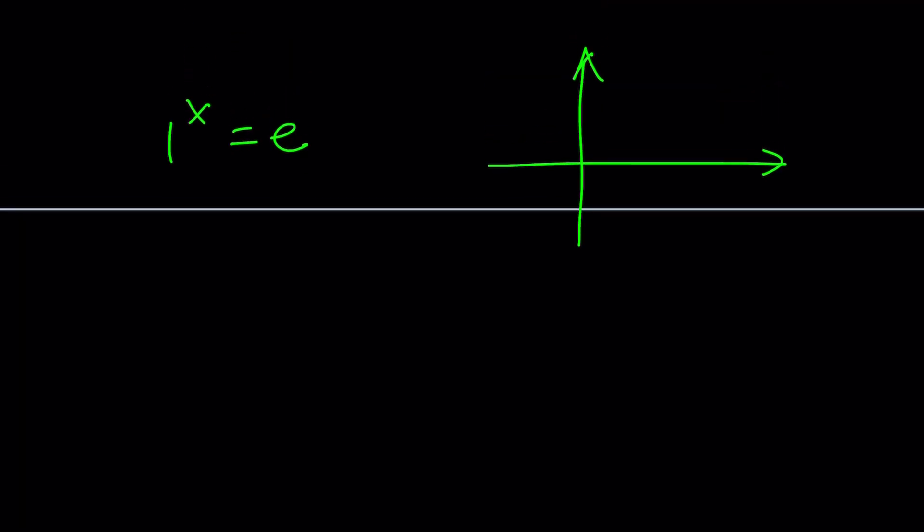We have 1 to the power x equals e. We want to express 1 as a complex number. To do that, we're going to consider the complex plane, which is also called the Argand plane. This is the real part, this is the imaginary part. We have 1, which is 1 plus 0i, which corresponds to the point 1 comma 0. When you're connected to the origin, you realize that its modulus, absolute value, or r, is also 1.